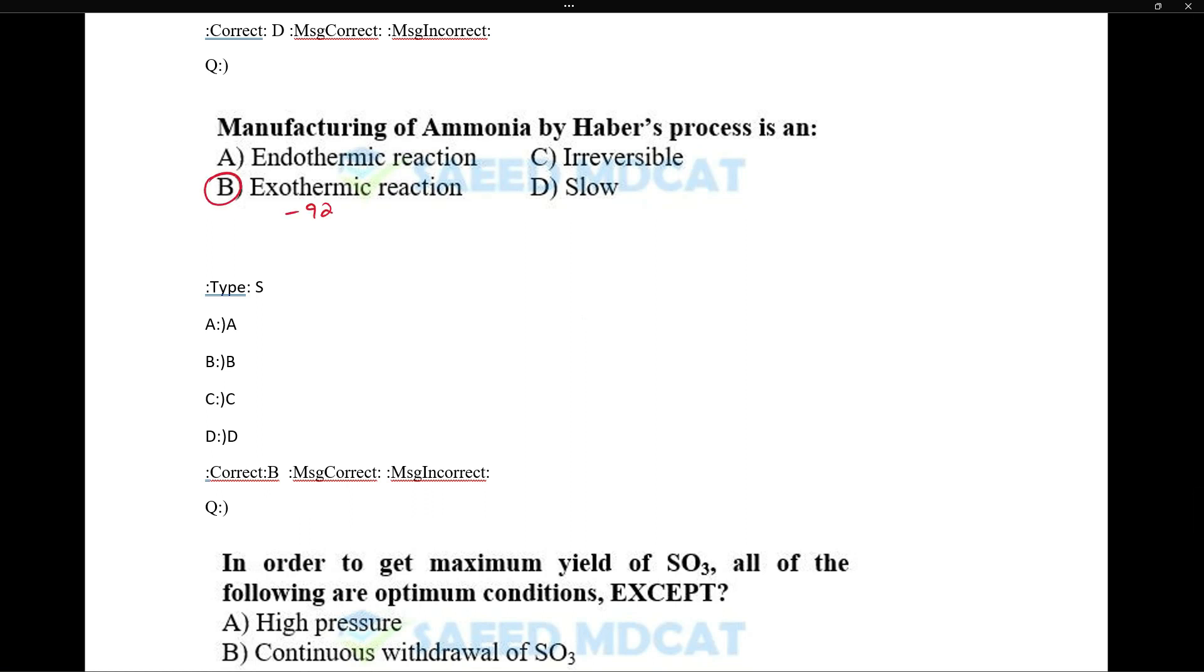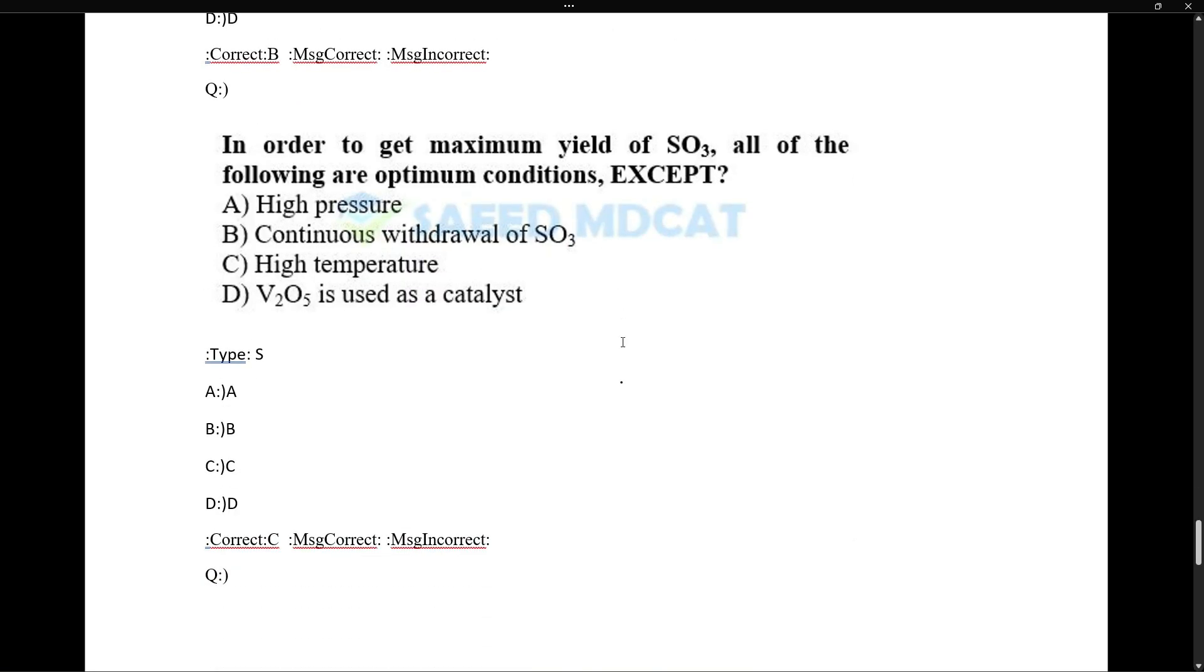The manufacture of ammonia by Haber process is an exothermic process, negative 92.46 kilojoule energy is released. In order to get maximum yield of SO3 - this is SO3 formation, this is an exothermic process, negative 196, so temperature is reduced.